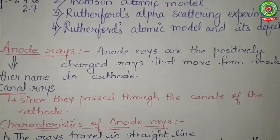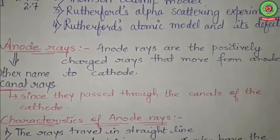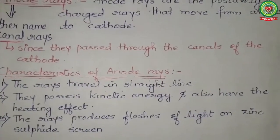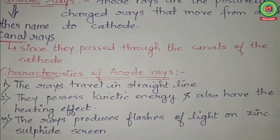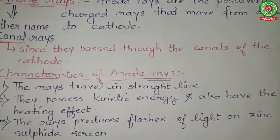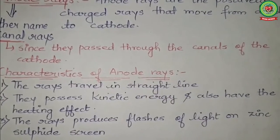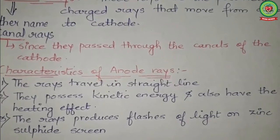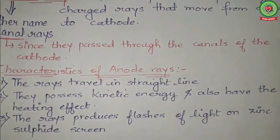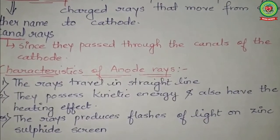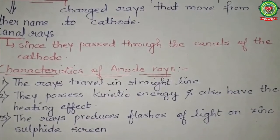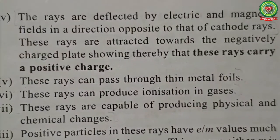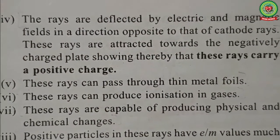The characteristics and properties of anode rays are mostly similar to those of cathode rays. First, they travel in a straight line — proved by placing an object in their path. They possess kinetic energy and have a heating effect. The rays produce a flash of light on a zinc sulfide screen, so if a fluorescent screen is kept behind the cathode, a green glow is observed when the rays travel from anode to cathode.